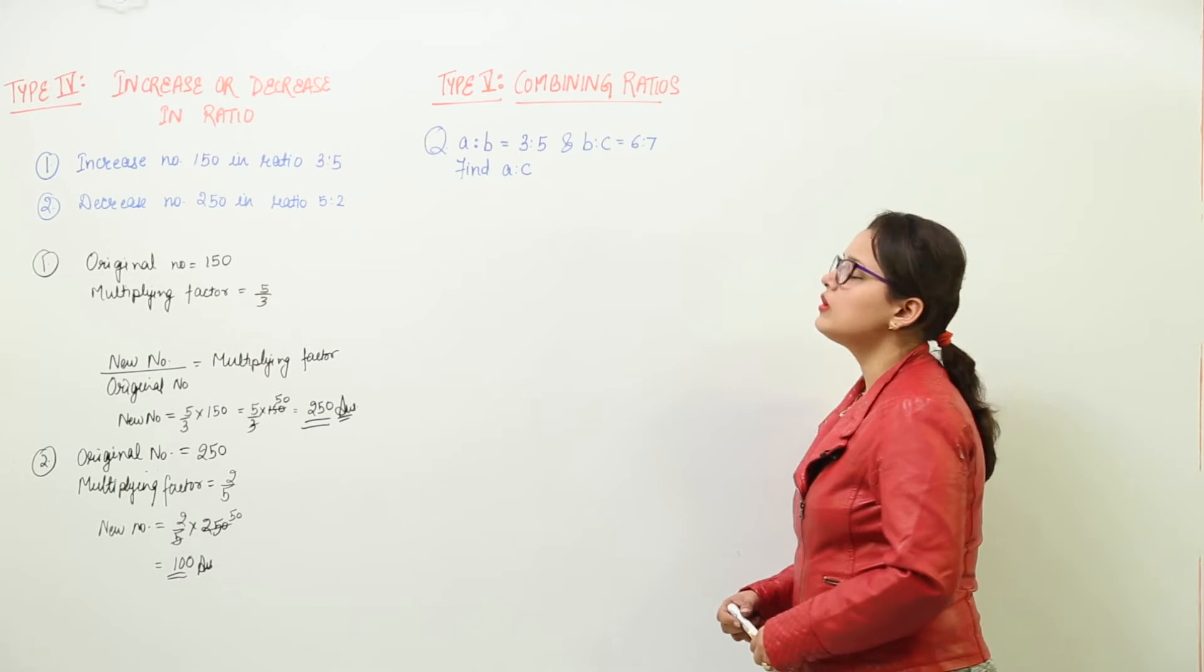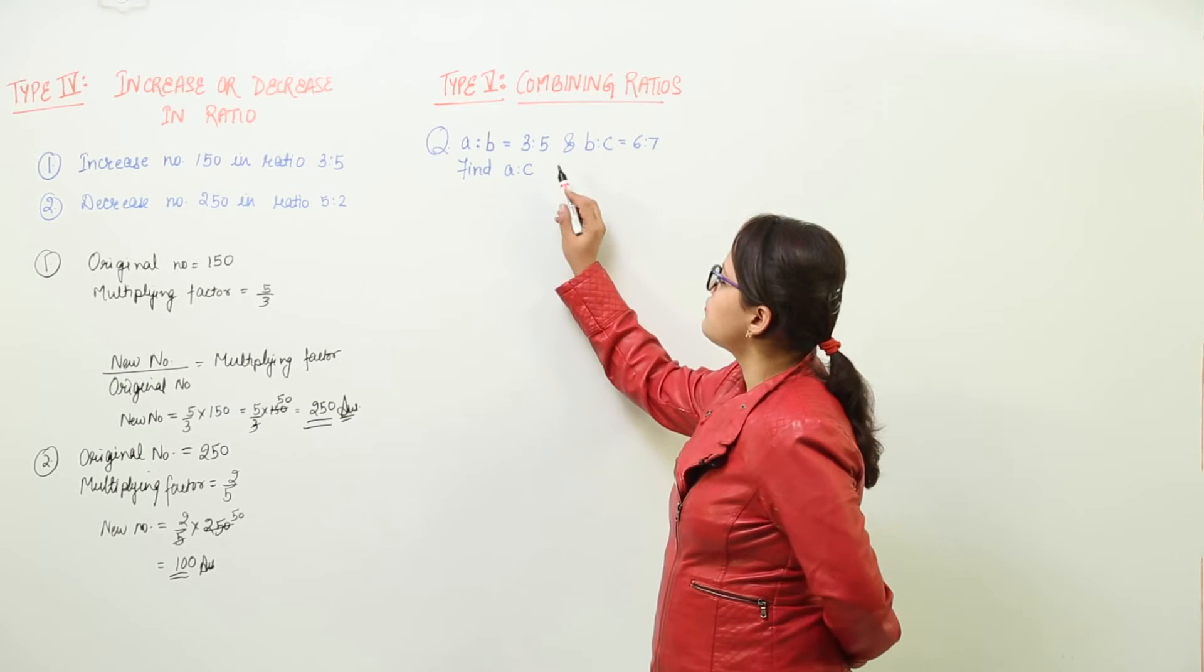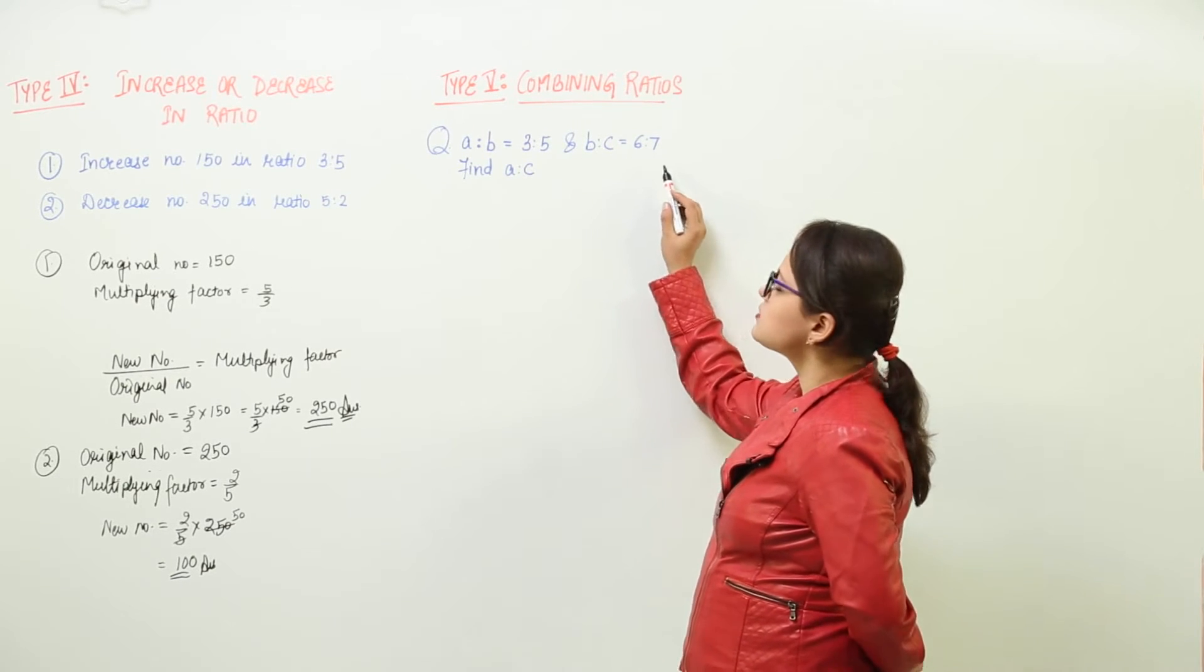Now we have to learn how to combine ratios. If A is to B is given as 3 is to 5, and B is to C is given as 6 is to 7,